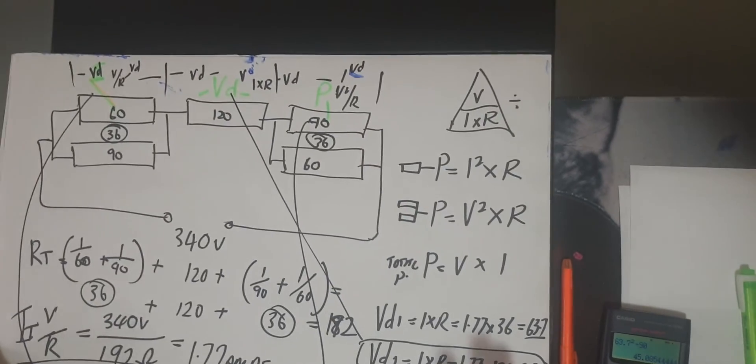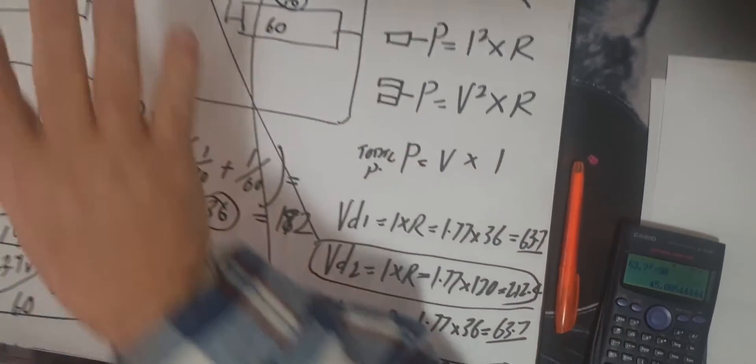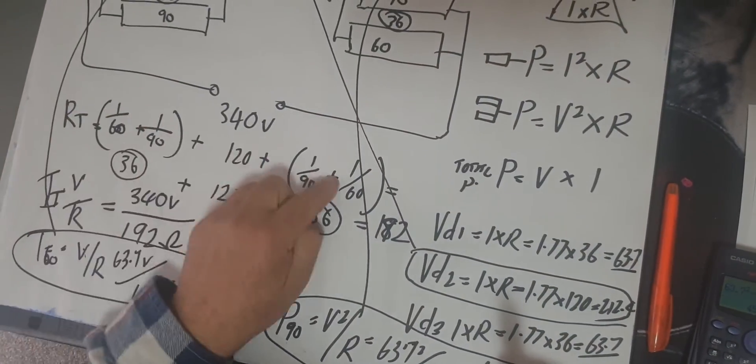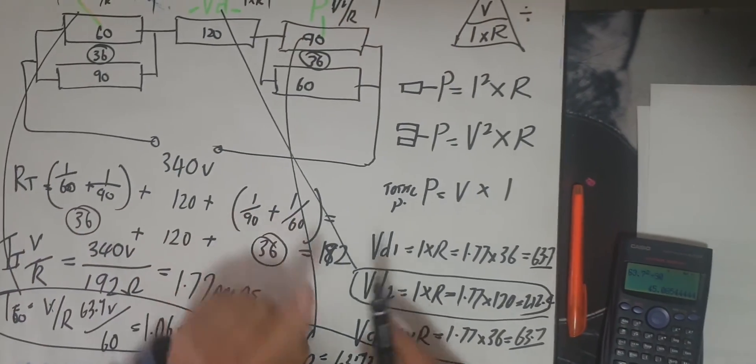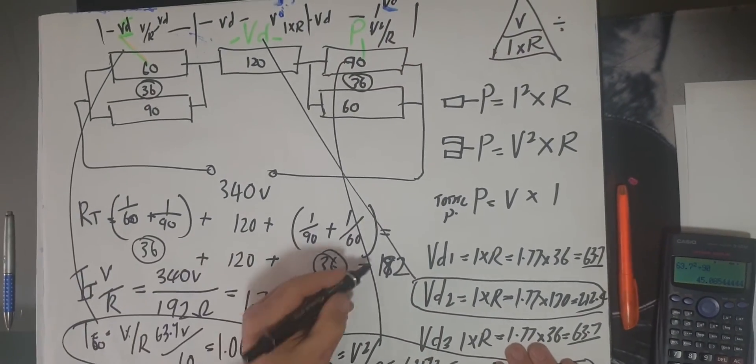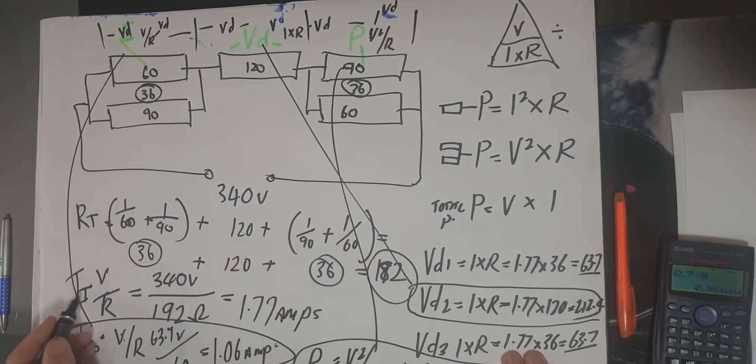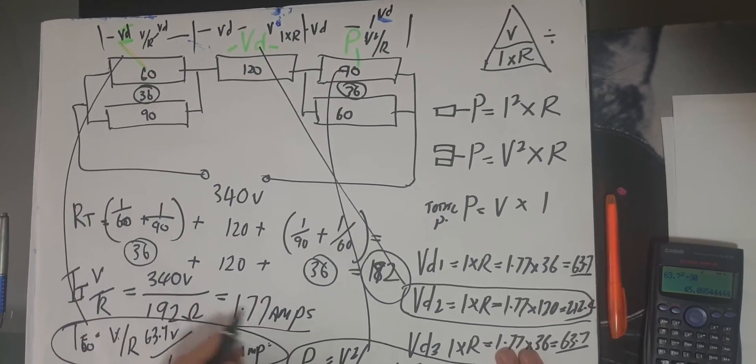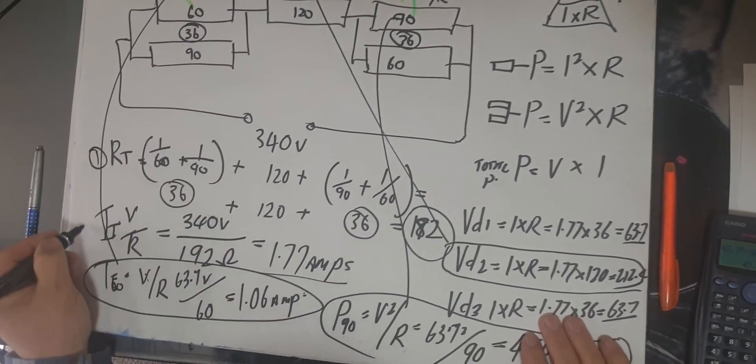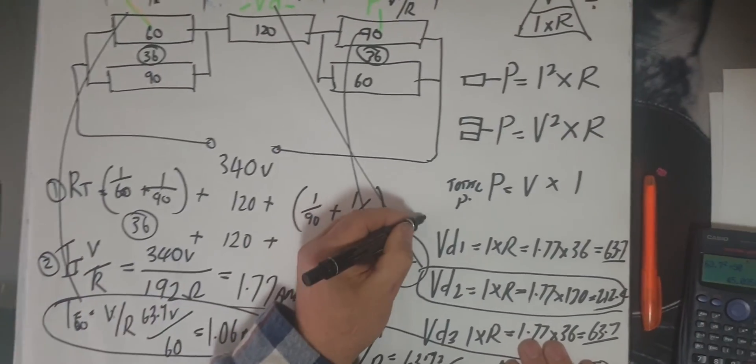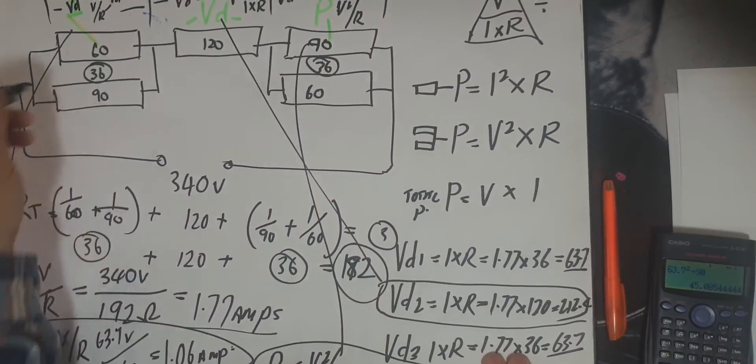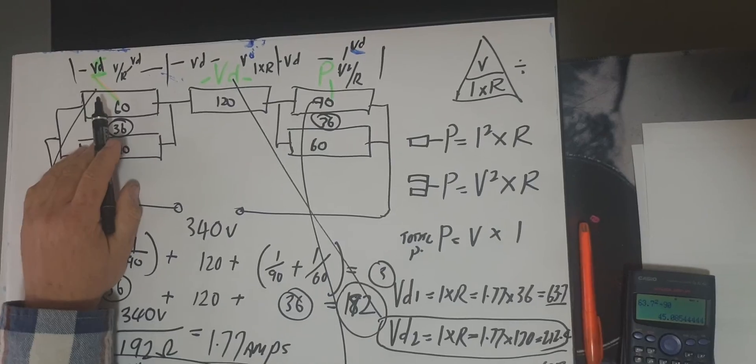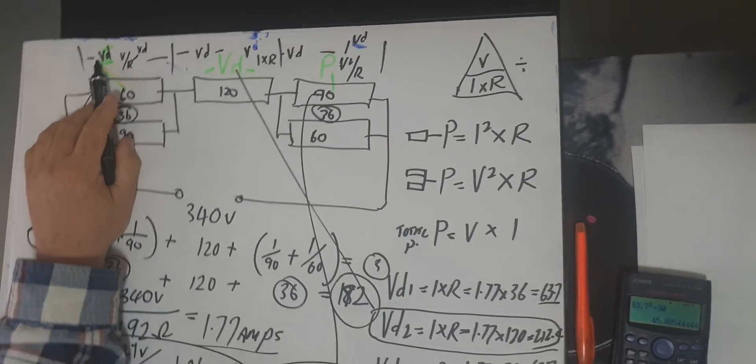So just a step back from what we did. What I did first - I went and did all my voltage drops. I did my resistance total, did that first, I got 192. Found my current total which gave me 1.77. So step one, step two, then I did step three - found all the voltage drops, broke them down. Because when I worked and broke down the formulas, I needed the voltage drop for the current, I needed the voltage drop for the power.